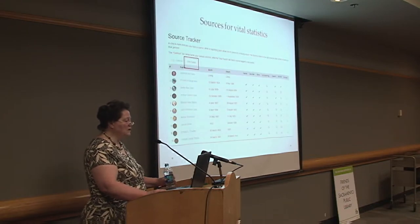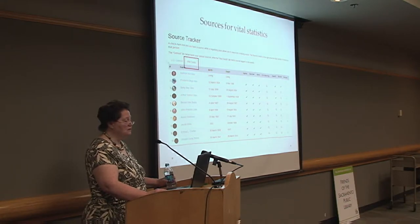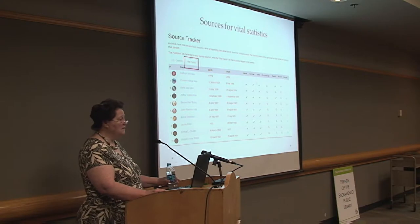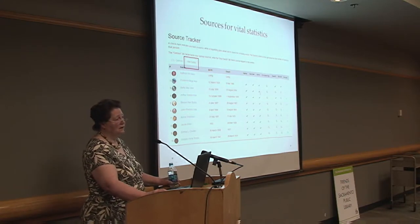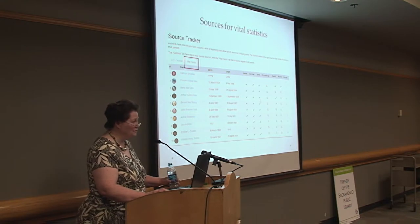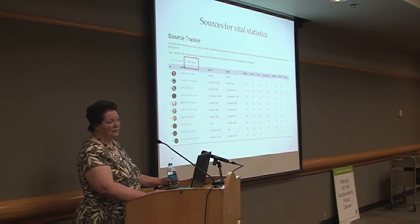There's another tab on Source Tracker besides the US Census tab — there's also a vital events tab where you can look for marriage, birth, and death records. All on the same platform. And you're all saying, why haven't I been using this? Yes, you have been working too hard. Go get a donut and come back.